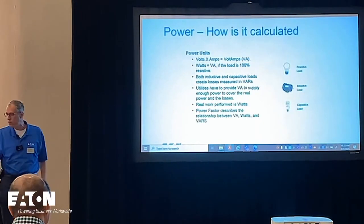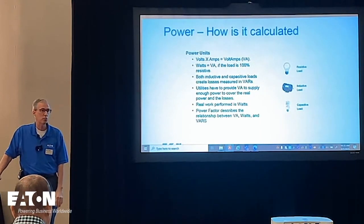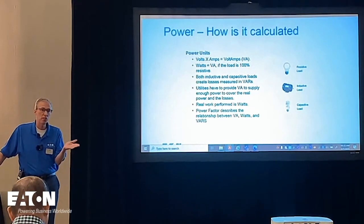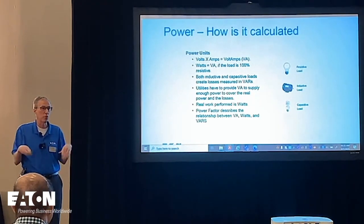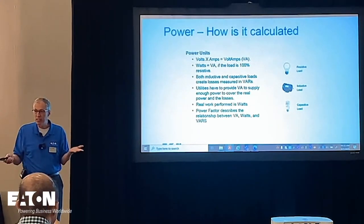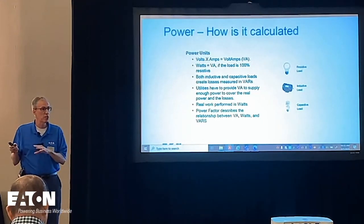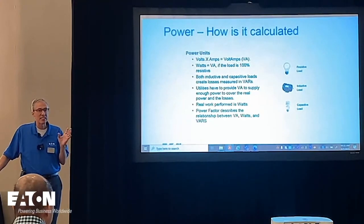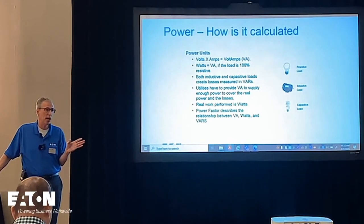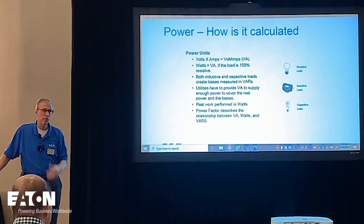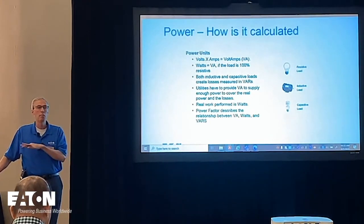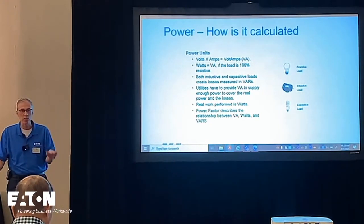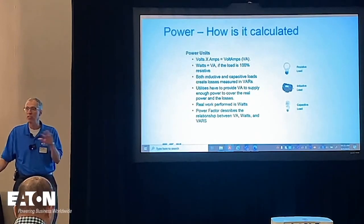Another thing the utility provides is VA, or volts times amps. If a facility is all electric resistance loads like heaters, the VA supplied equals the watts of work done. But a facility with motors has some power doing actual work and some generating waste heat — the VA is the total the utility must provide, and watts is what's actually doing work. The difference is waste, and power factor is the ratio between them. Utilities may charge a power factor penalty below a threshold like 0.9. You can address this with capacitors, but today I'll focus just on the meters monitoring these parameters.